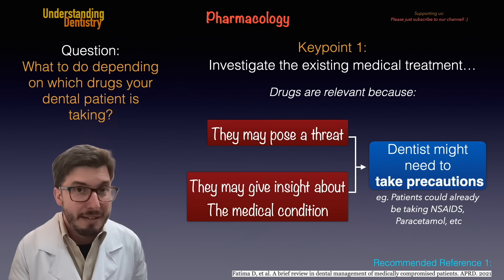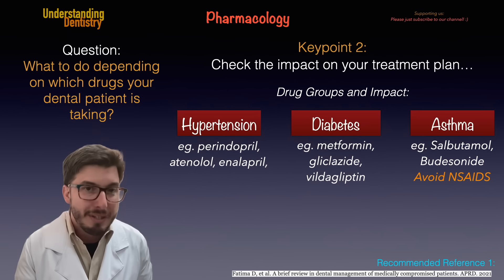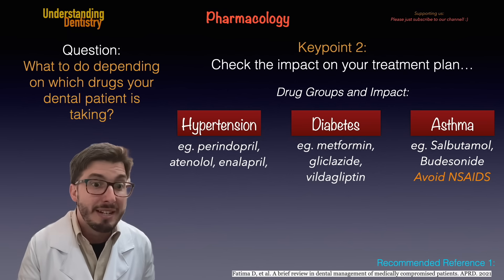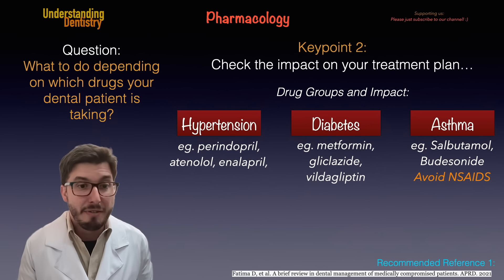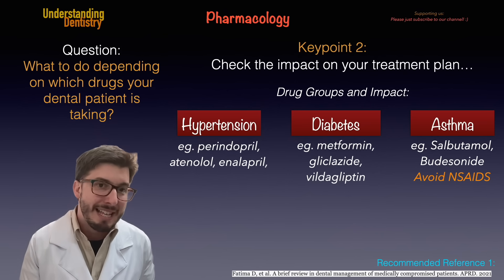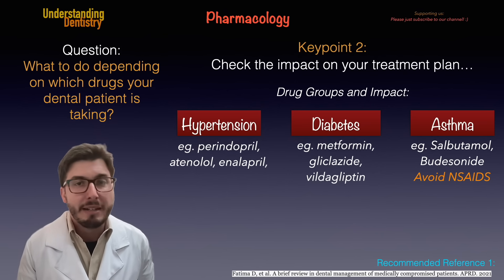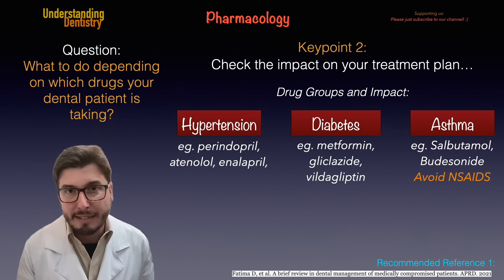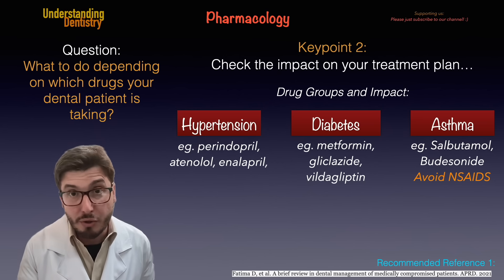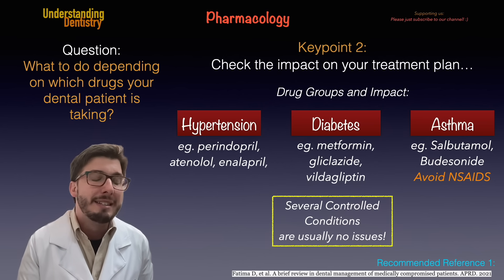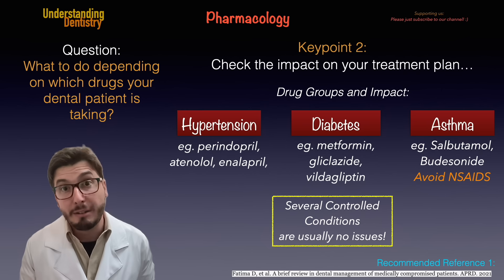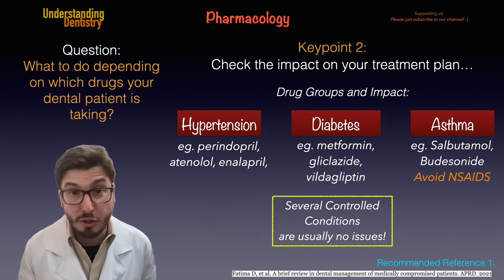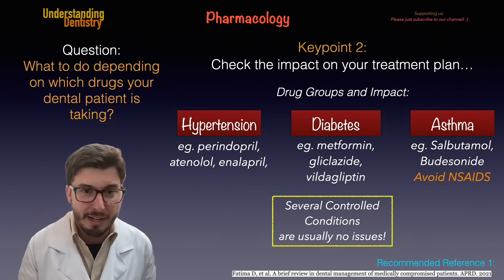Let's see the specific situations. The main common ones are on the screen: we have hypertension, diabetes, and asthma. Luckily for us, these conditions, if they are controlled, are usually not a contraindication for dental procedures. So take a look at this — this is very important.